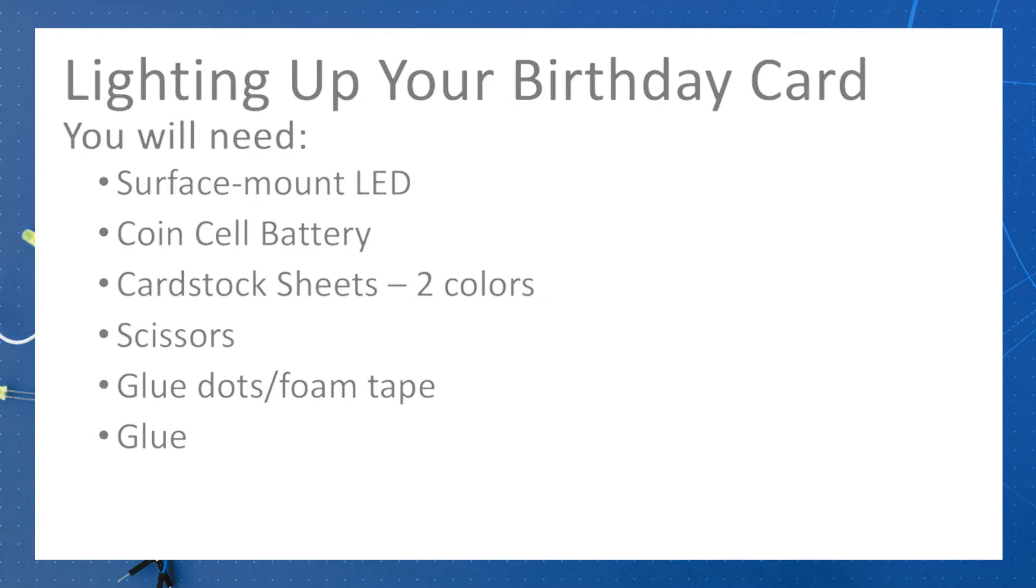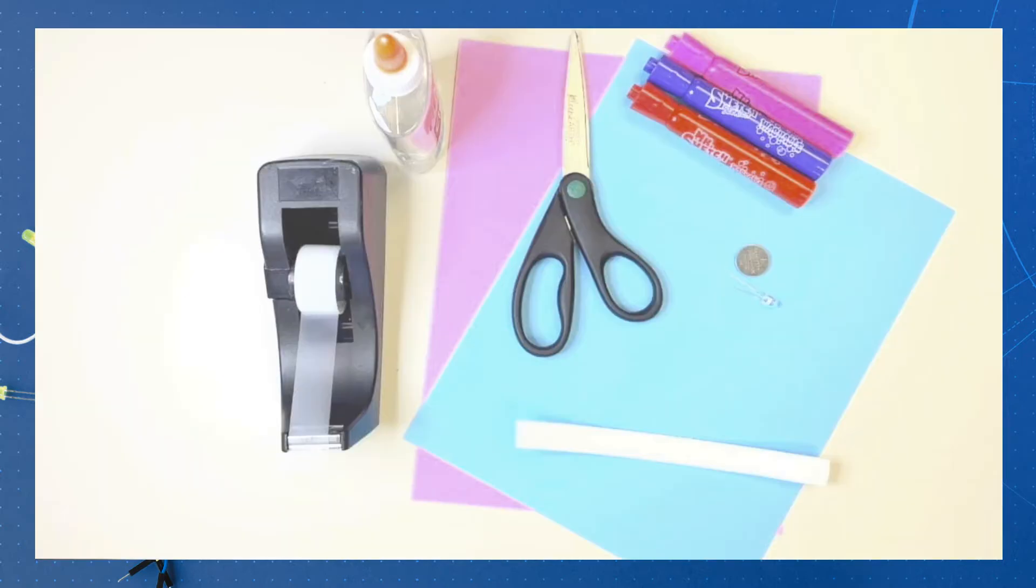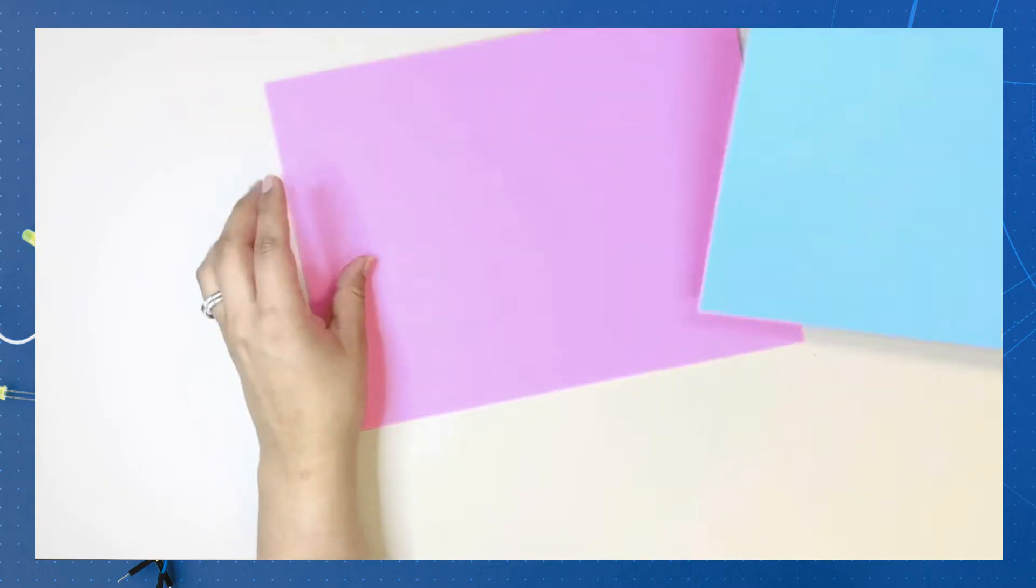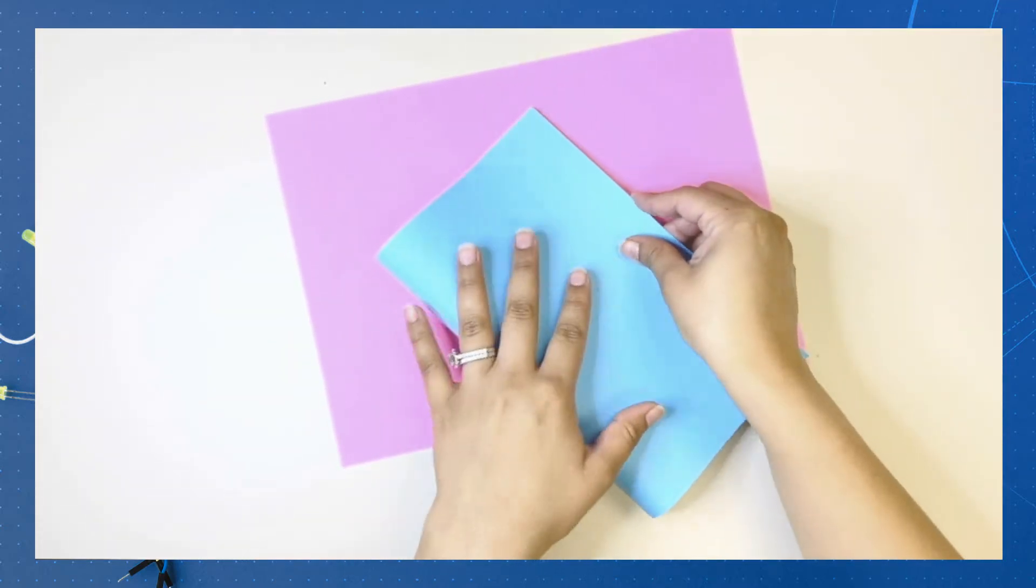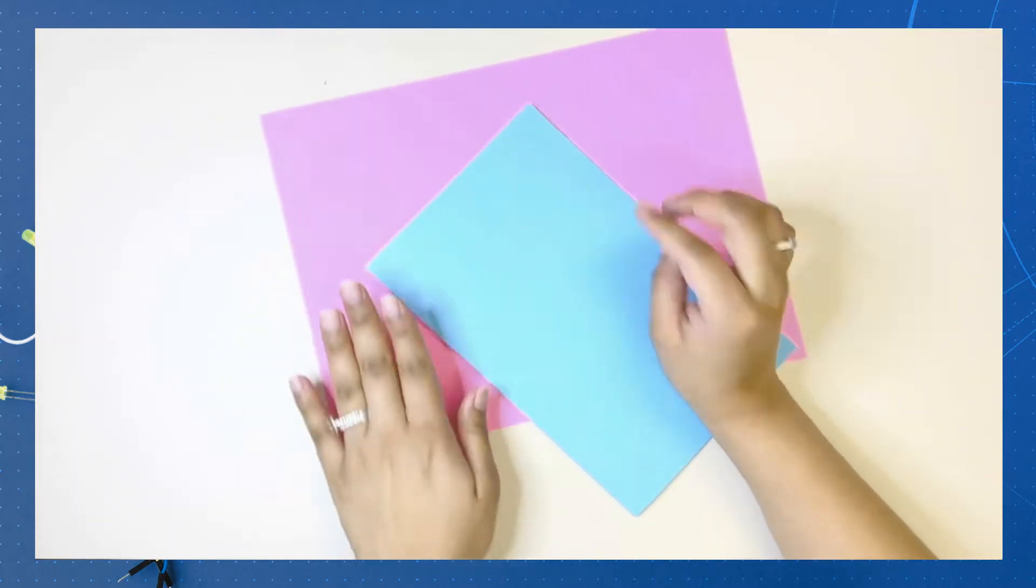You will need the following supplies for this activity. Now that we have collected all of our supplies, let's get started. We will begin by creating the base of our card. Take one sheet of cardstock paper and fold it in half vertically.